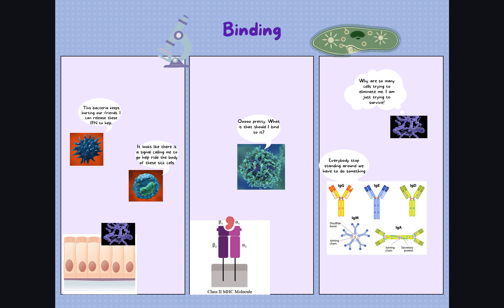Moving into adaptive immunity, we have antigen presenting cells where antigen can be presented. Especially in Strep pneumo, MHC2 molecules play a larger role. We have MHC1 as well, which allows antigen to bind with CD8 cells and apoptosis to be triggered. But it is with MHC2 where we will see a larger adaptive immune response and the ultimate elimination of the pathogen. Our professional antigen presenting cells are dendritic cells, macrophages, and B cells.